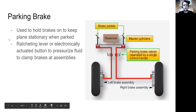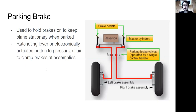The parking brake is used to hold the brakes on to keep the plane stationary when parked. In the cockpit, there's a ratcheting lever, or sometimes an electronically actuated button, that pressurizes the fluid when you are stopped to clamp the brakes at the assemblies, keeping the wheel and airplane stationary.